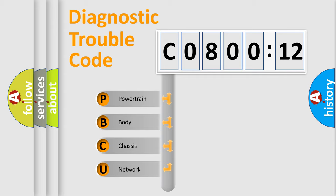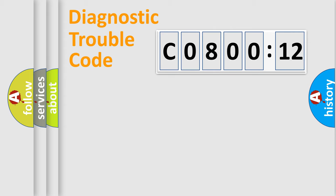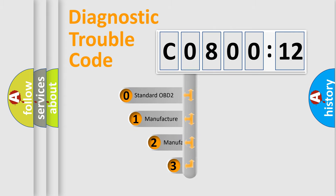We divide the electric system of automobile into four basic units: Powertrain, Body, Chassis, and Network. This distribution is defined in the first character code.